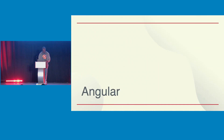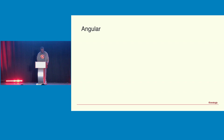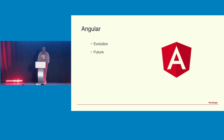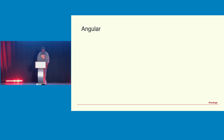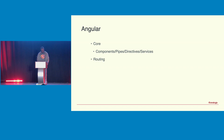Next, I want to talk about Angular itself and how it has moved and evolved over its lifetime. Going back to Angular's core features — components, pipes, directives, services, routing, HTTP client, forms, SSR, and more — let's look at some of the evolution that has happened.